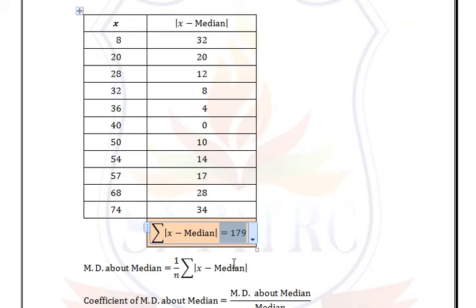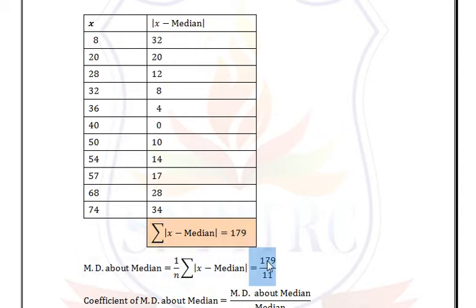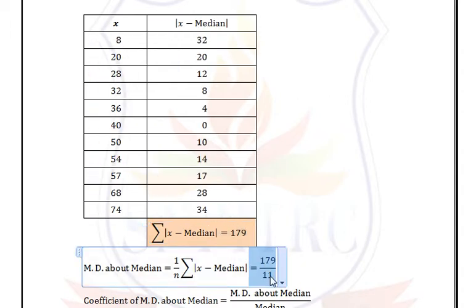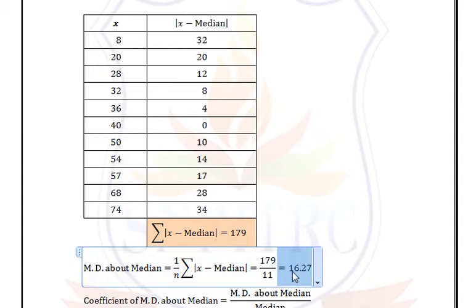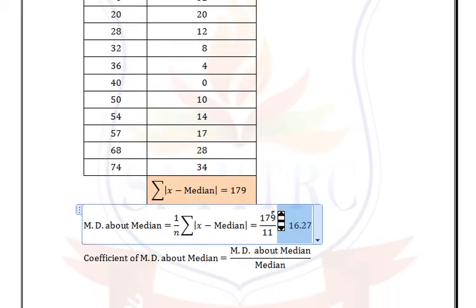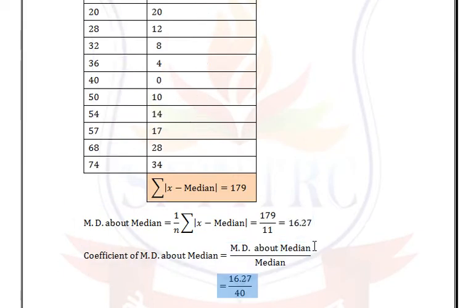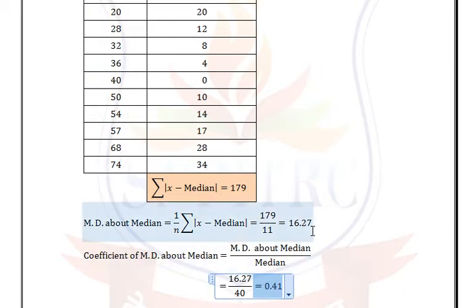We substitute this value in the formula: mean deviation about median = 179/11 = 16.27. The coefficient of mean deviation about median is 16.27/40 = 0.41.